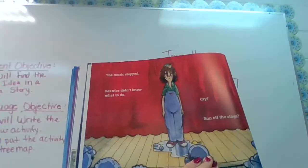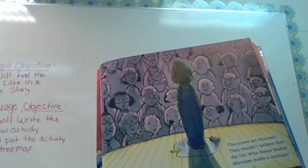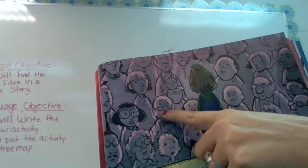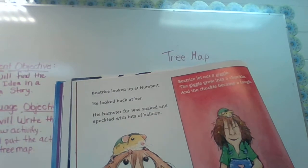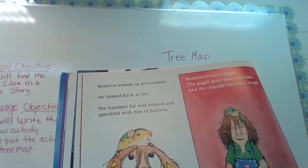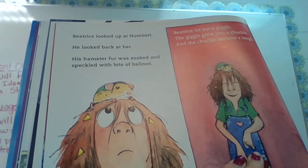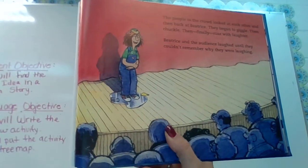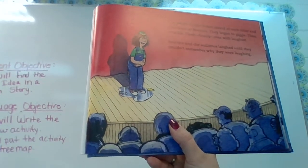The music stopped. Beatrice didn't know what to do — cry, run off the stage. The crowd sat stunned. They couldn't believe the girl who never made mistakes made a mistake. See all their faces? Beatrice looked up at Humbert. He looked back at her. His hamster fur was soaked and speckled with bits of balloon. Beatrice let out a giggle that grew into a chuckle, and the chuckle became a laugh. The people in the crowd looked at each other and then back at Beatrice. They began to giggle, then chuckle, then finally roar with laughter.